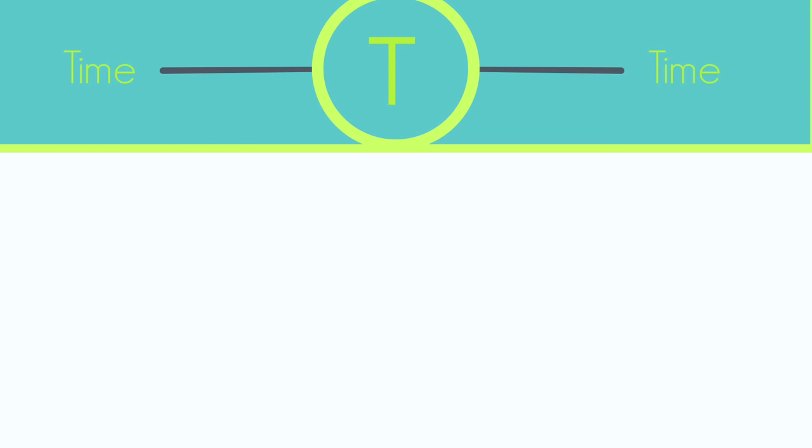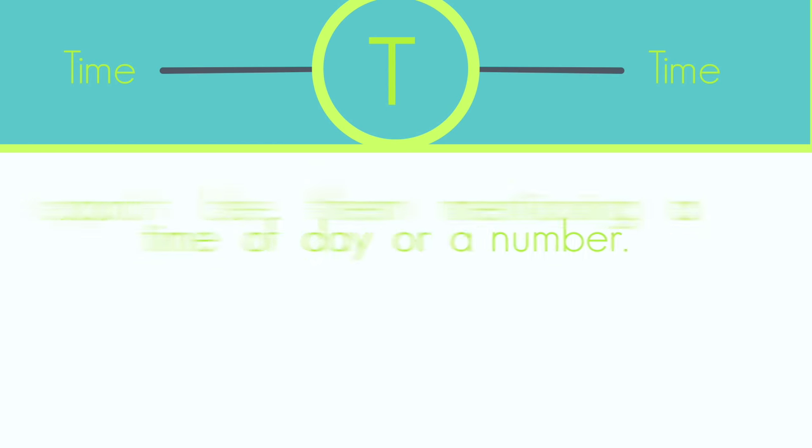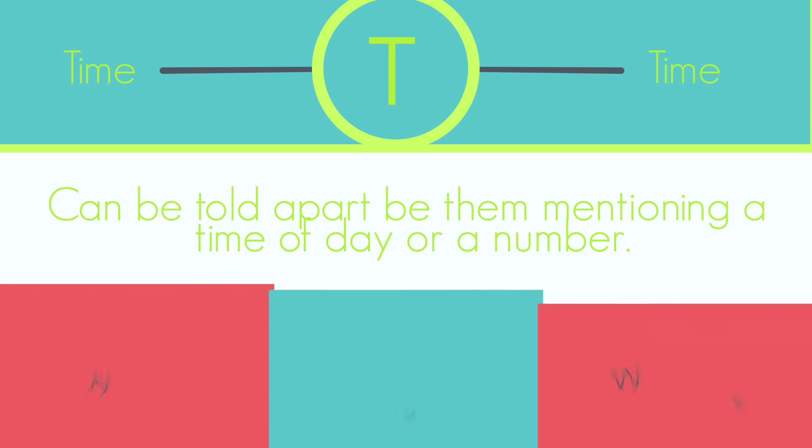T is the next letter, and it stands for TIME. Time words will be placed after the first verb. You can usually tell time words apart from other words by them mentioning a time of day or a number that indicates hours or minutes. Examples of time words can be MIDDAG, MORE, and EER.